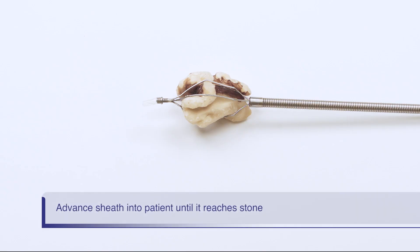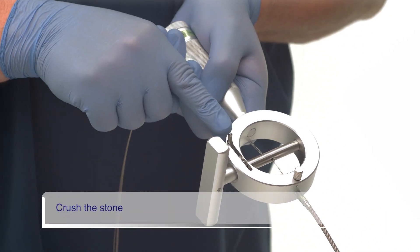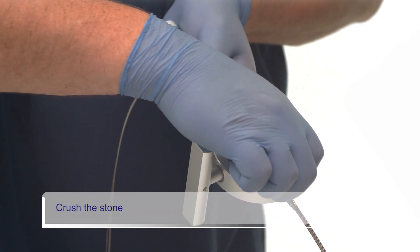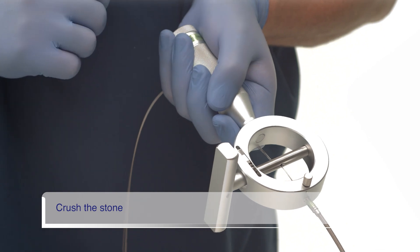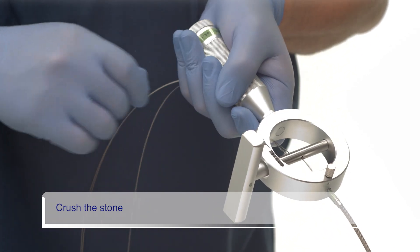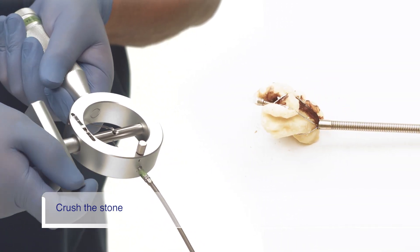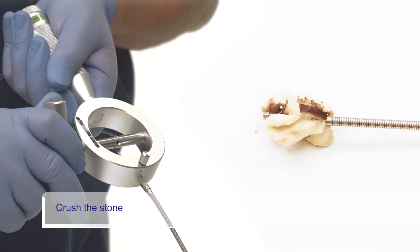Confirm the sheath has reached the stone. Ensure that the ratchet is in the locked position and confirm the coil sheath is locked into the handle. While holding the wires against the handle with your left hand, slowly turn the rotatable bar with your right hand to crush the stone.